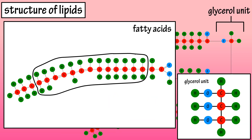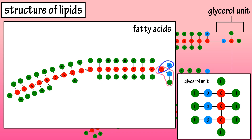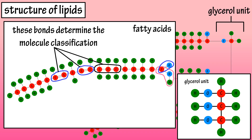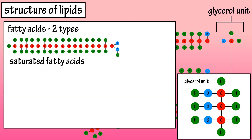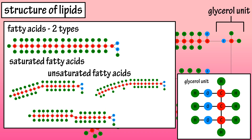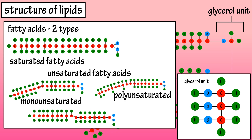Fatty acids are made up of long chains of carbon atoms and hydrogen atoms, with an end carbon atom bonded to a hydroxyl OH group and a double bond to an oxygen atom. Some carbon atoms are linked by single bonds and others by double bonds, and these bonds determine which type of fatty acid the molecule is classified as. There are two types of fatty acids: saturated fatty acids and unsaturated fatty acids, which include monounsaturated fatty acids, polyunsaturated fatty acids, and trans fatty acids.